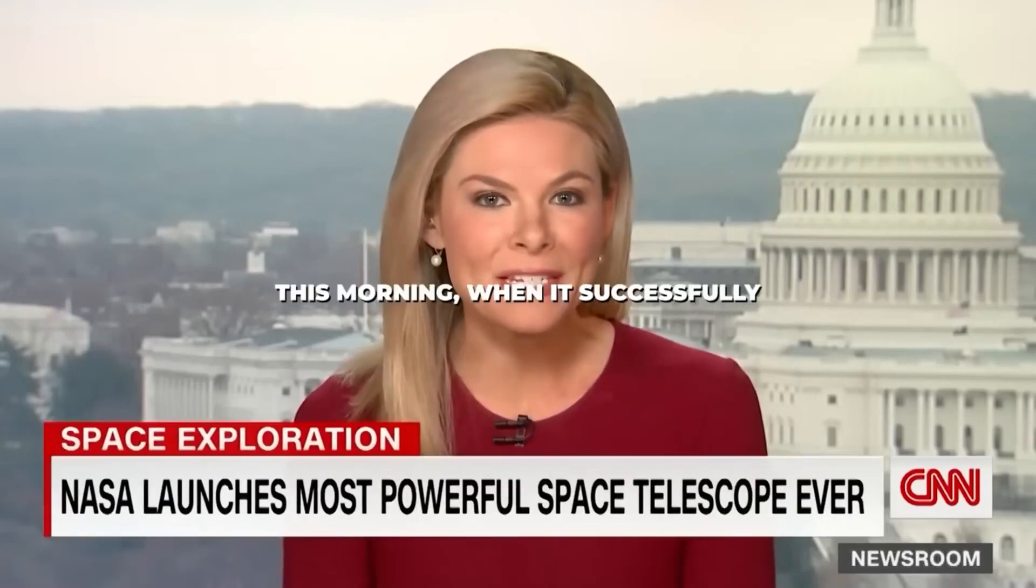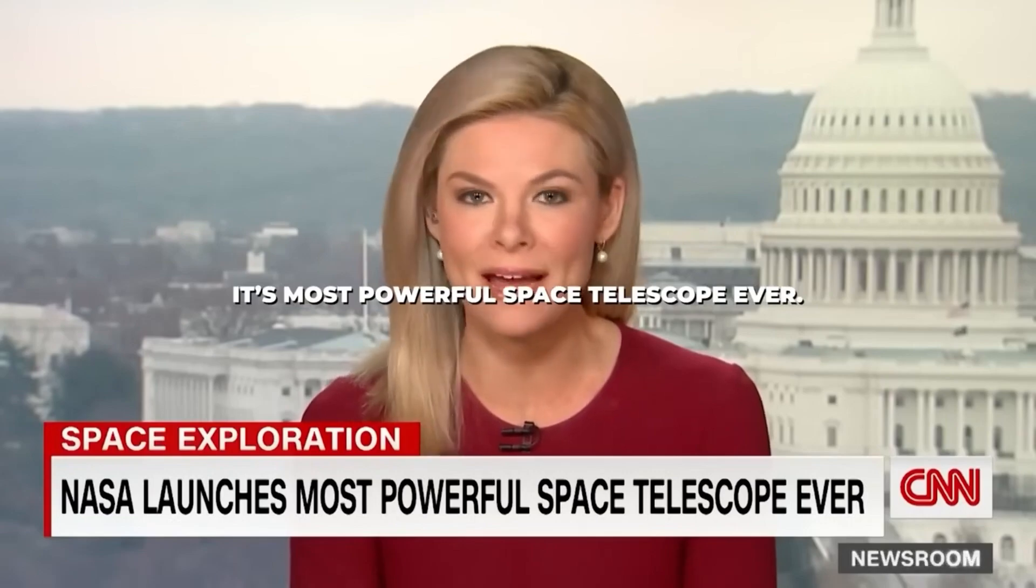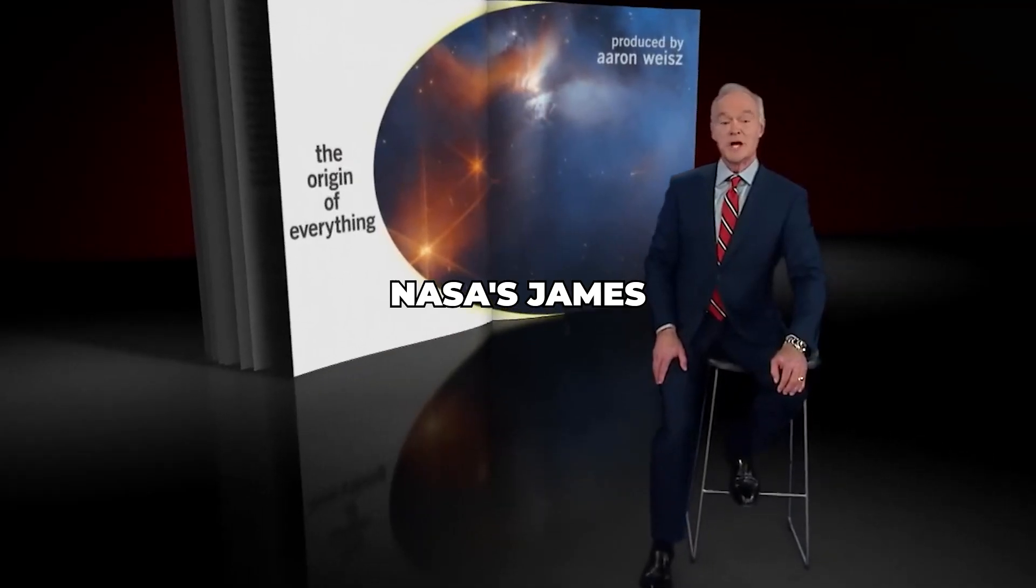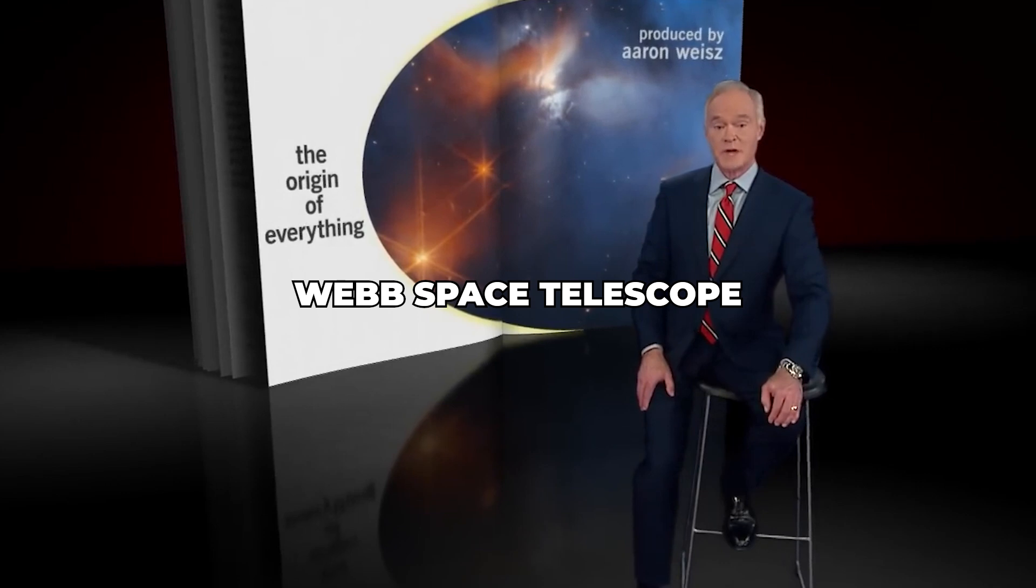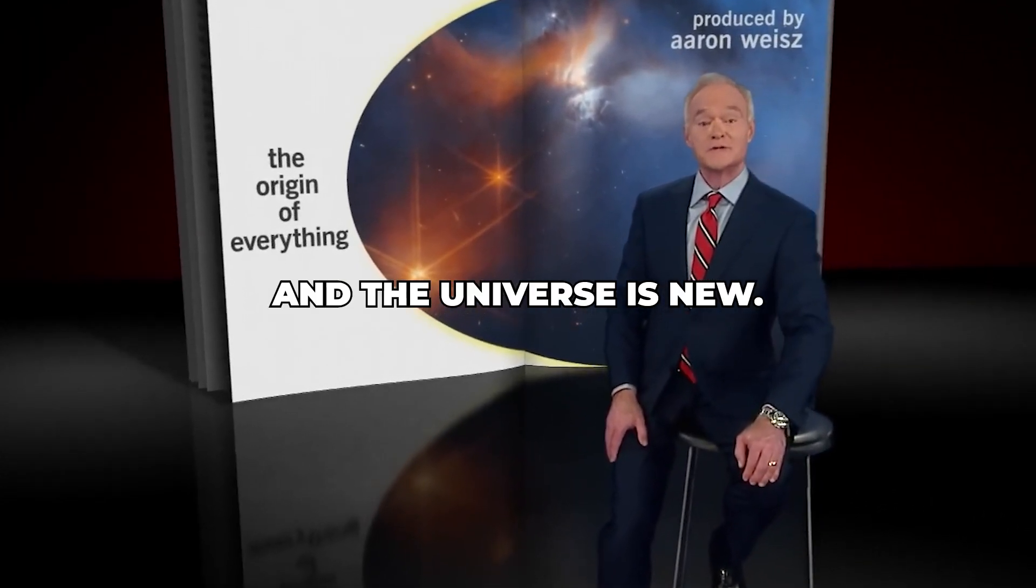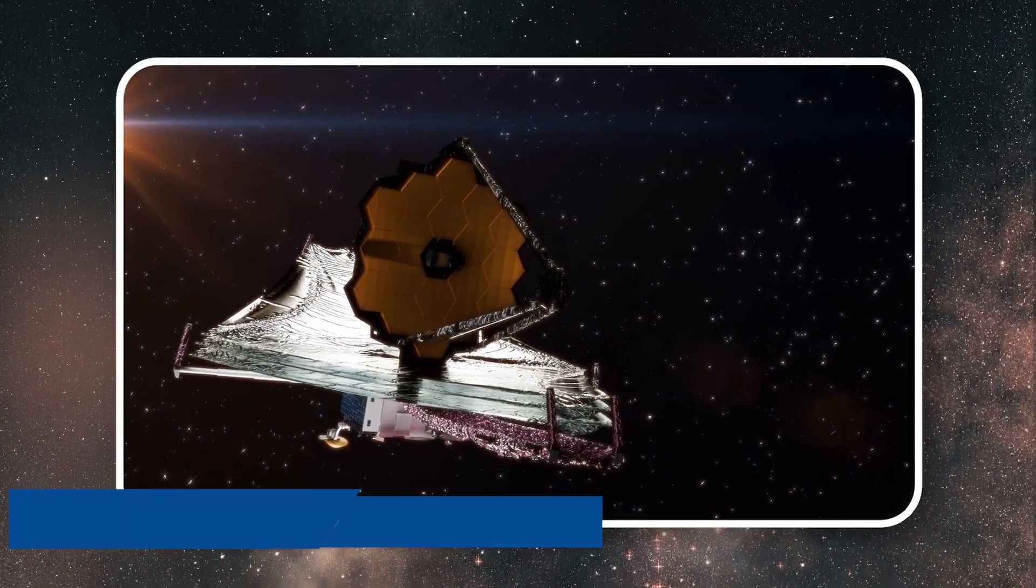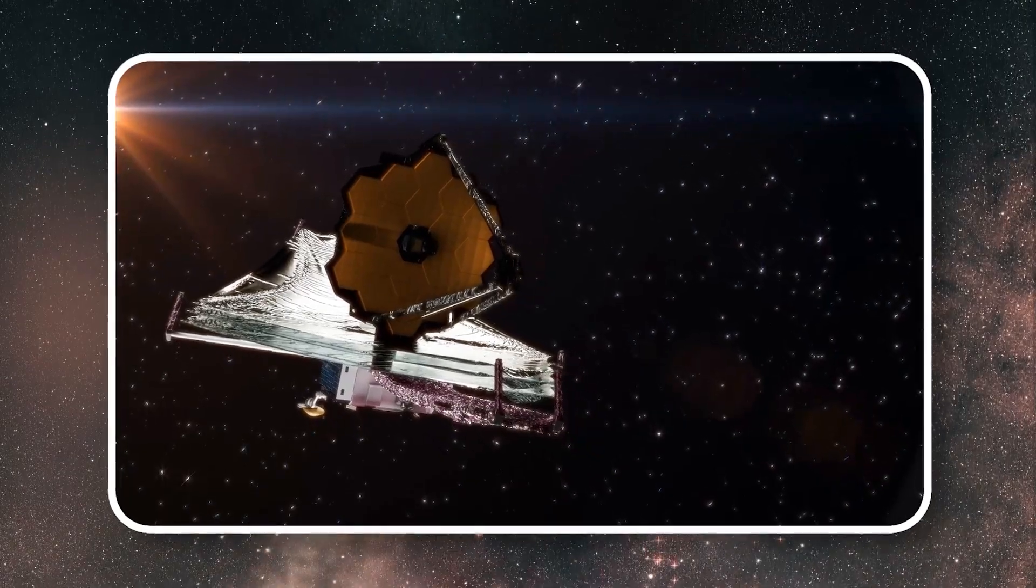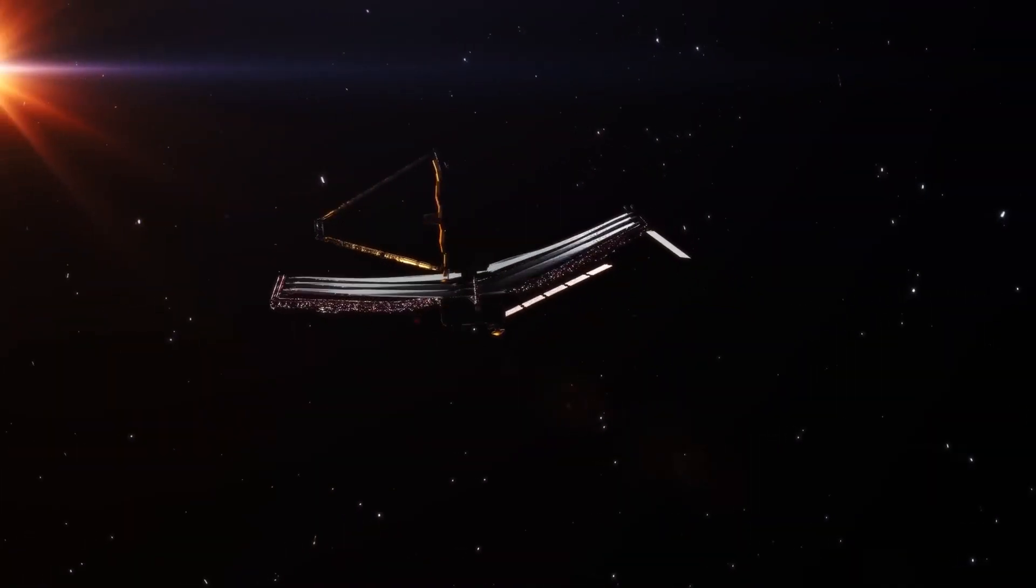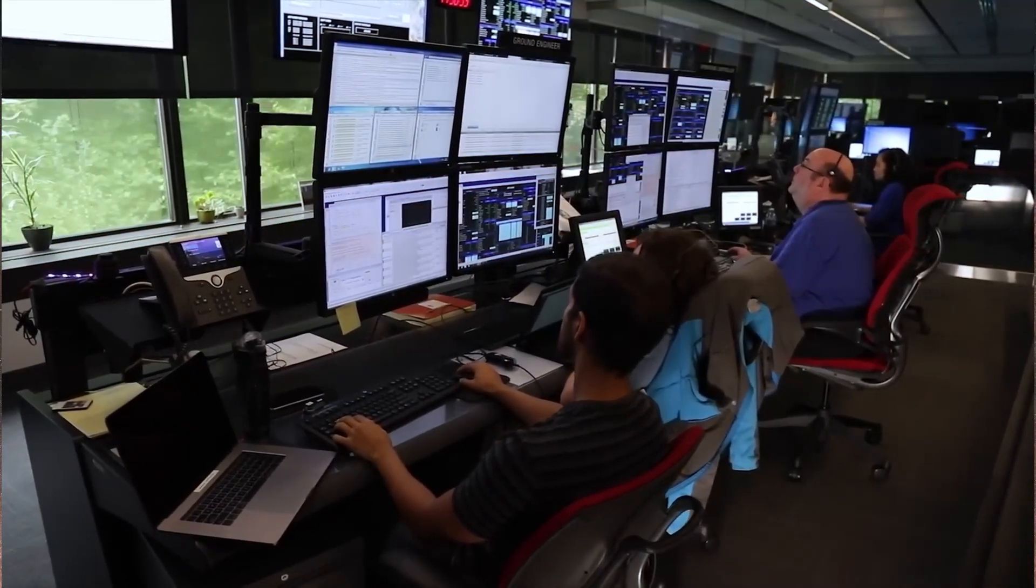NASA got a huge Christmas gift this morning when it successfully launched its most powerful space telescope ever. NASA's James Webb Space Telescope has hardly opened its eyes and the universe is new. City lights on another planet, that's what the James Webb Space Telescope's new image of Proxima B reveals.